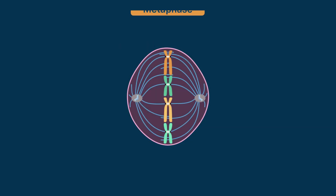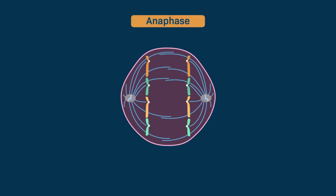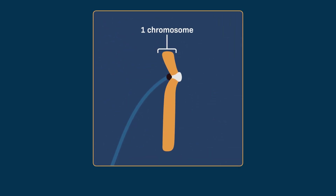During anaphase, a protein called separase separates the chromatids of each chromosome. The kinetochore microtubules shorten, which pulls the chromatids toward opposite spindle poles. Importantly, when counting chromosomes, we count the number of individual centromeres. This means that once the chromatids are separated, we refer to them as individual chromosomes because each one has its own centromere.